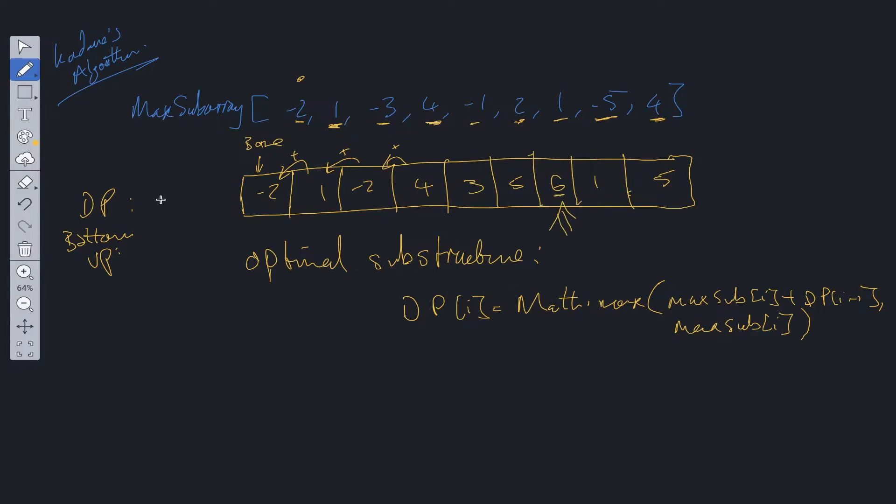However, with Kadane's algorithm, like I mentioned at the start, we do not use this DP array. Because we are only using the solution to the previous subproblem, we're not using multiple previous subproblems, we can actually just update two values as we go along when looping through this array. So time complexity for this algorithm is going to be O(n) where n is the number of inputs within this maximum subarray, and space is going to be O(1) constant space.